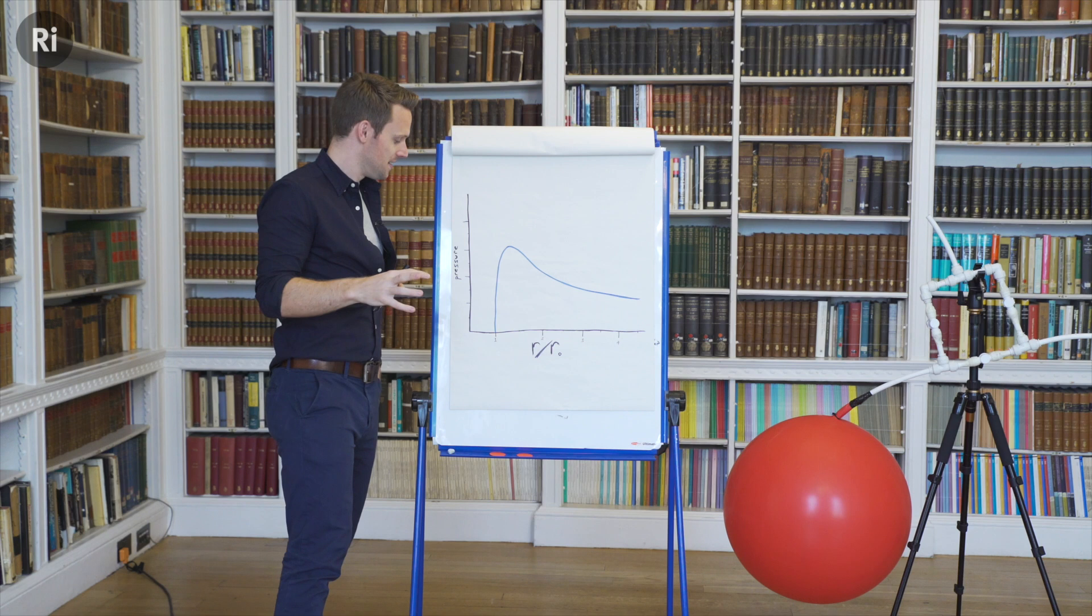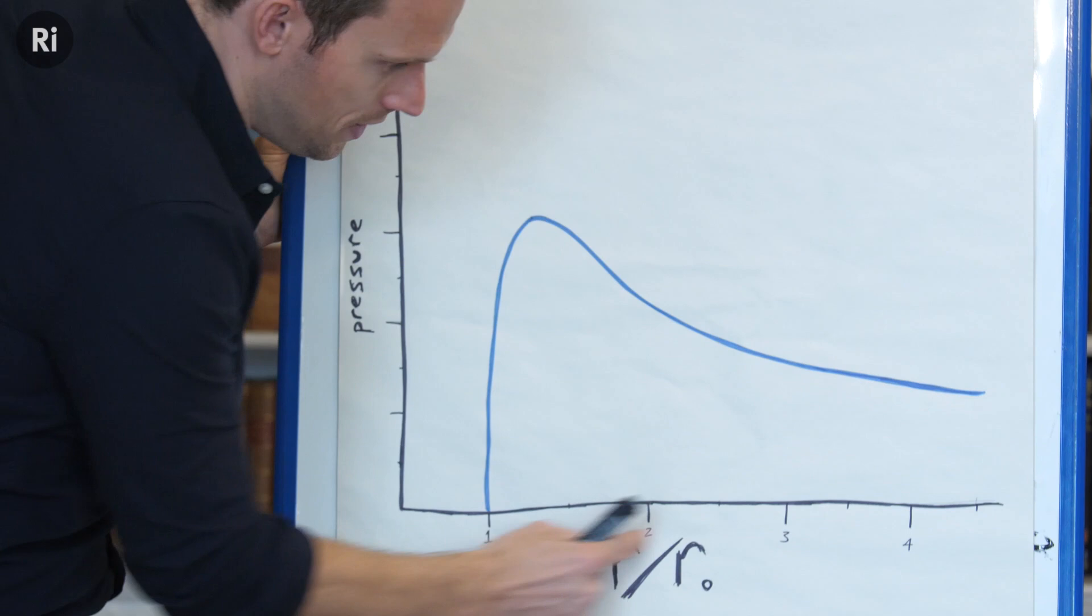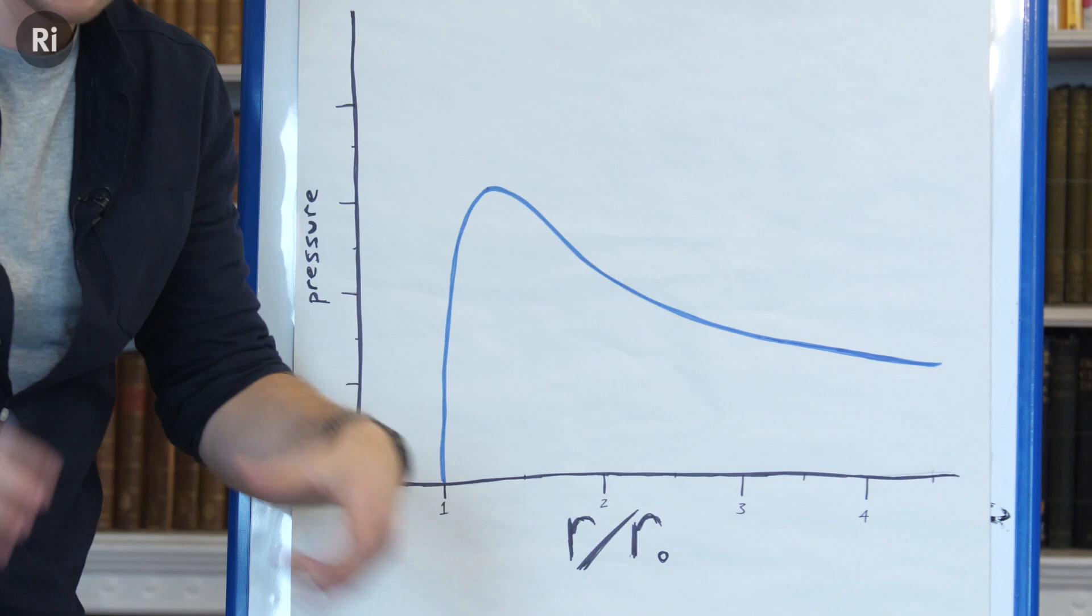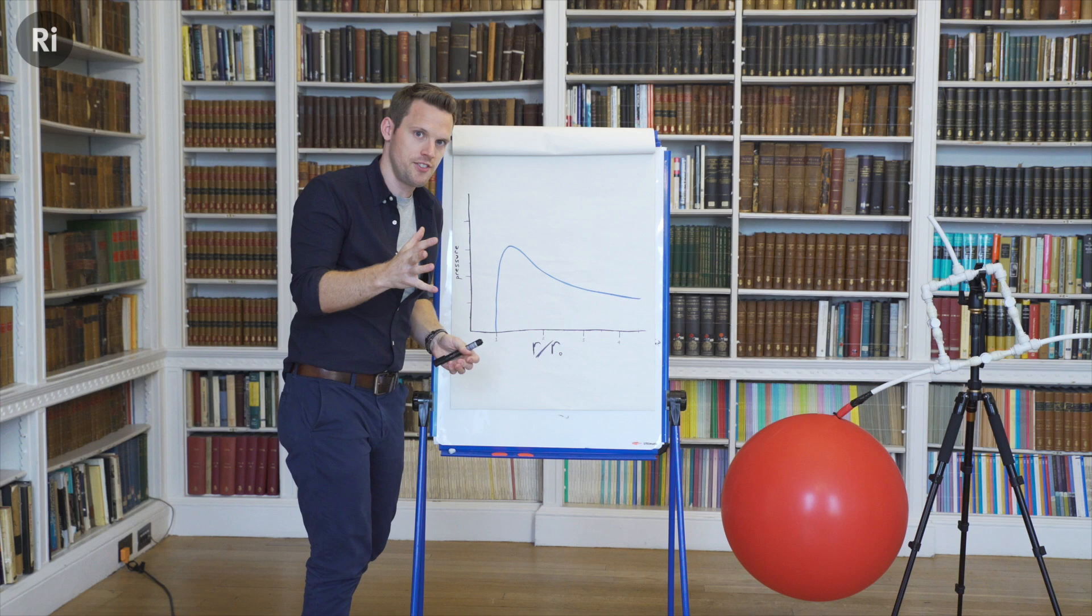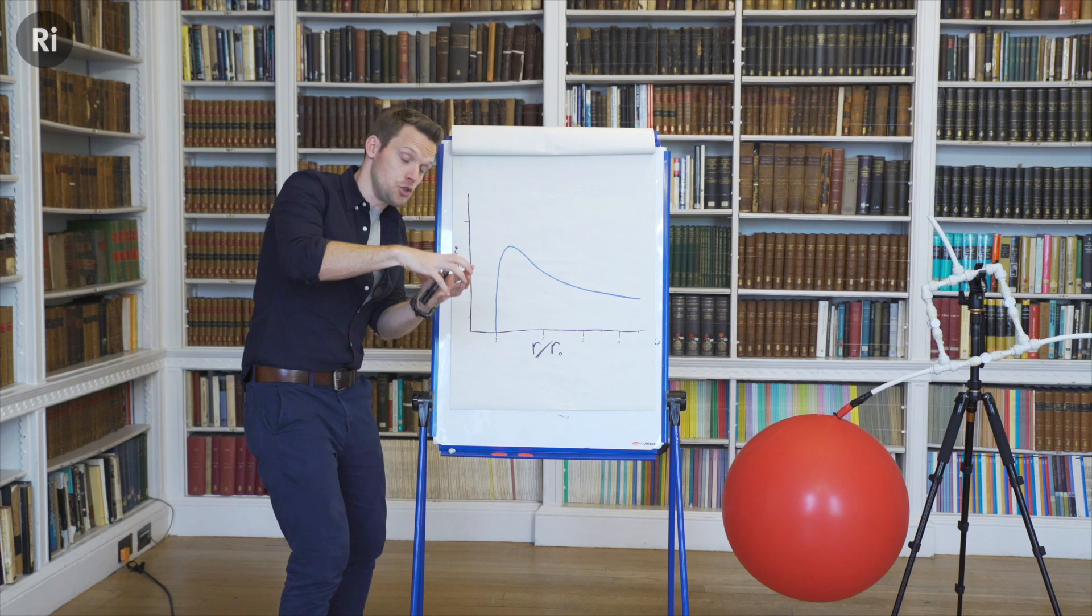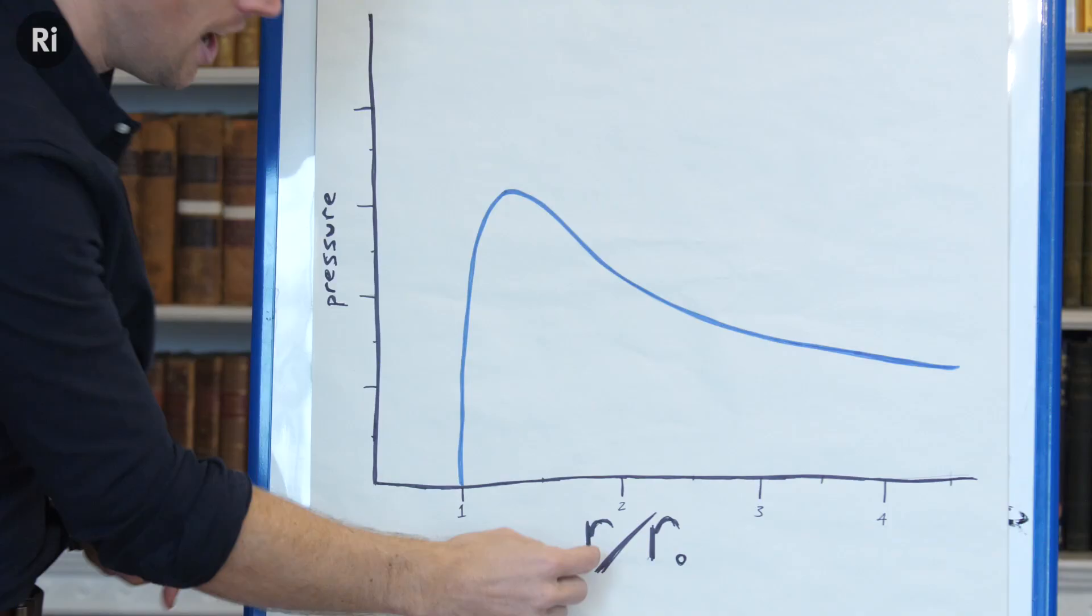So this is the pressure inside the balloon and this, the x-axis, is the ratio between the initial radius r0 and the radius once the balloon is inflated. That's helpful because before the balloon is inflated at all, r divided by r0 is going to be 1. Once you inflate it to twice the size of the initial radius, r over r0 is 2, etc.